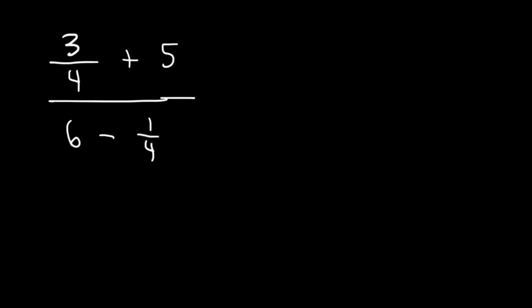A complex fraction is basically fractions within a larger fraction. Now the best way to simplify it is to multiply the numerator and the denominator by the denominator of the smaller fractions within the larger fraction. In this case, we're going to multiply the top and the bottom by 4.